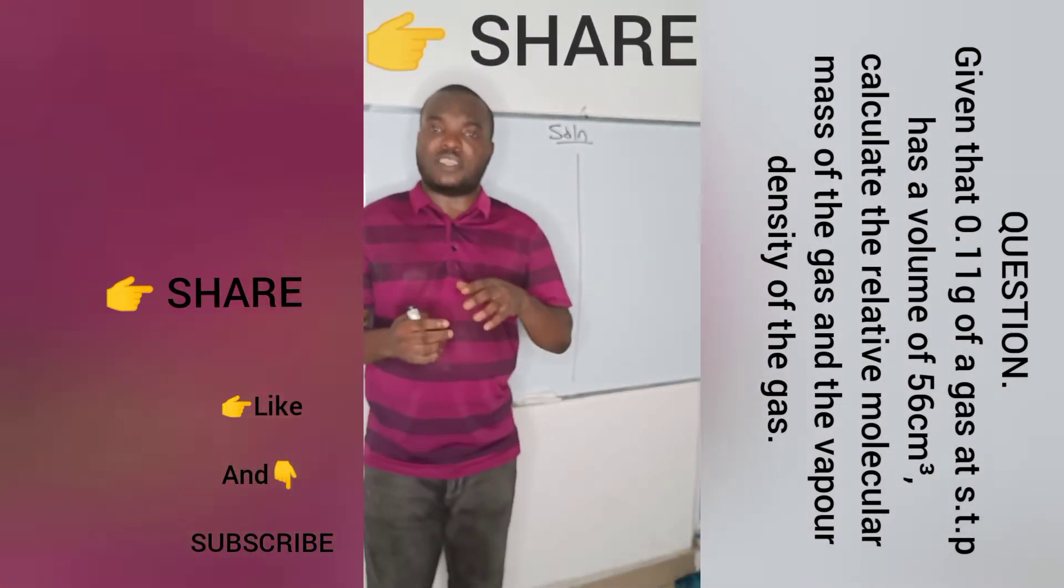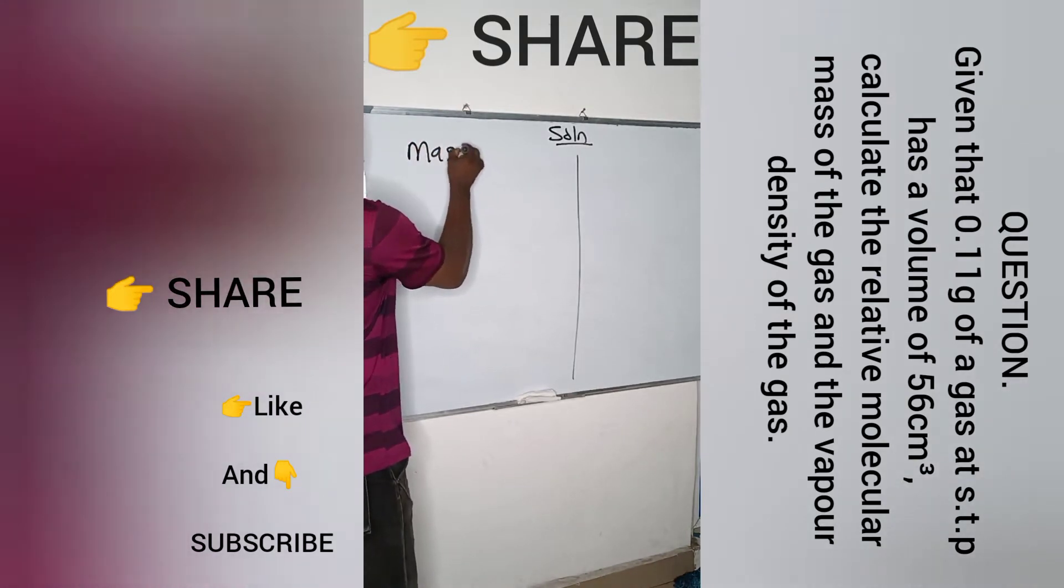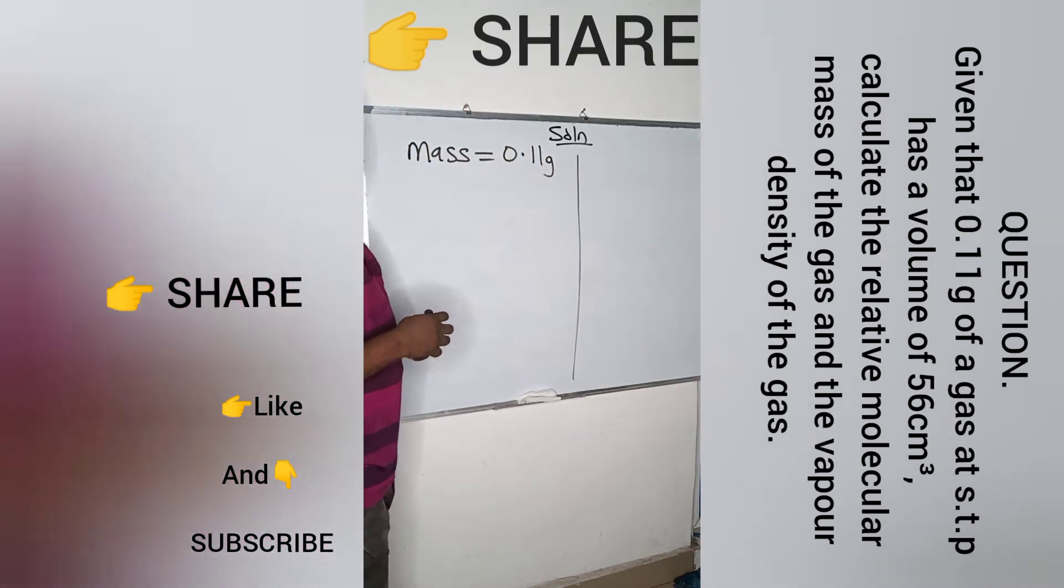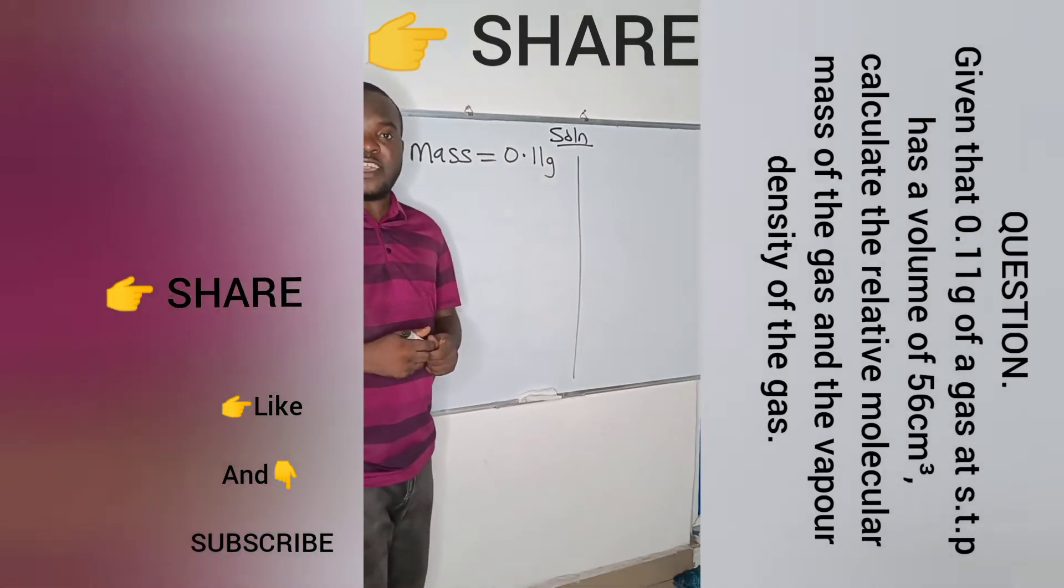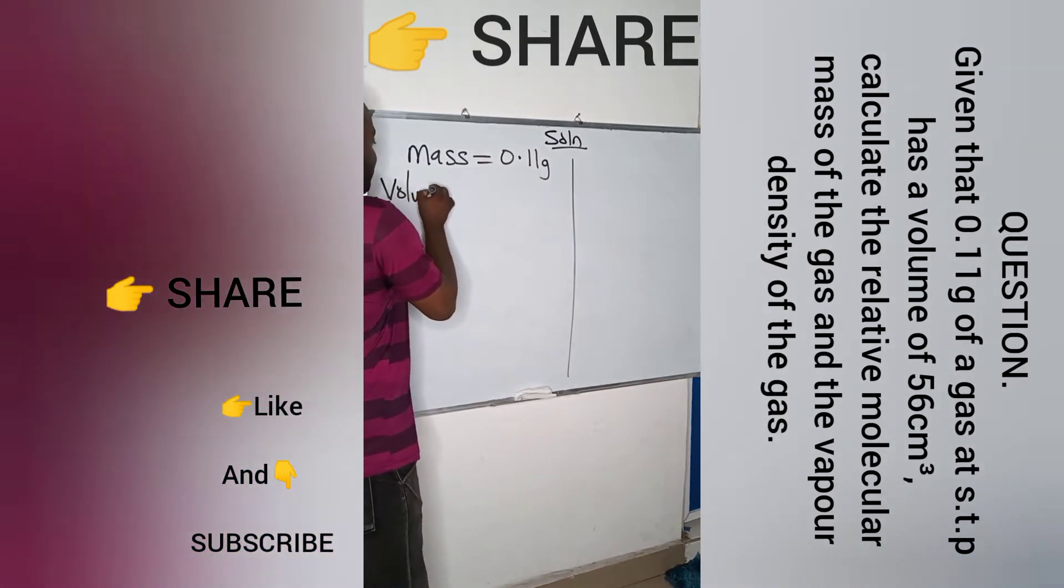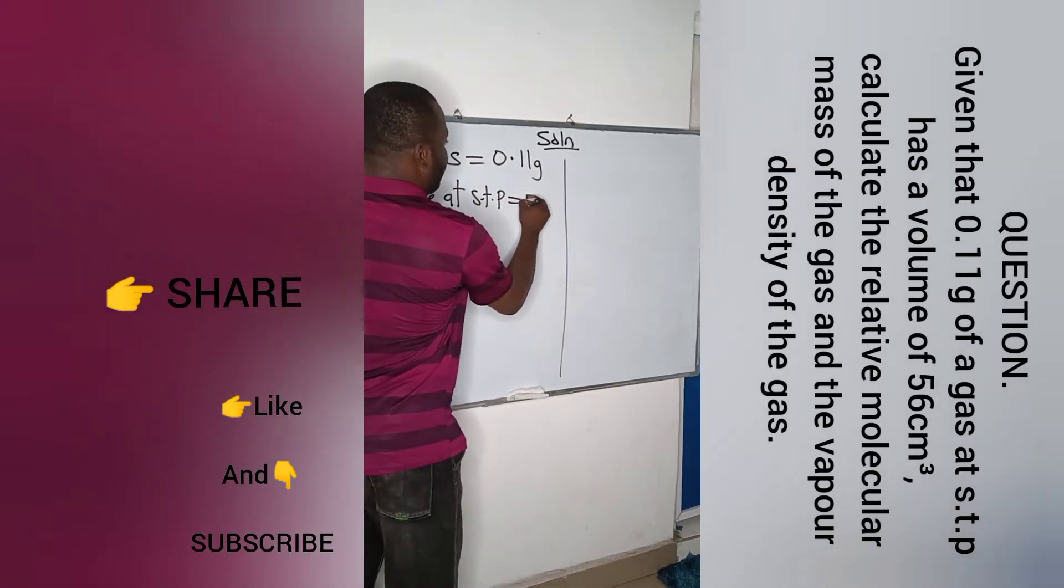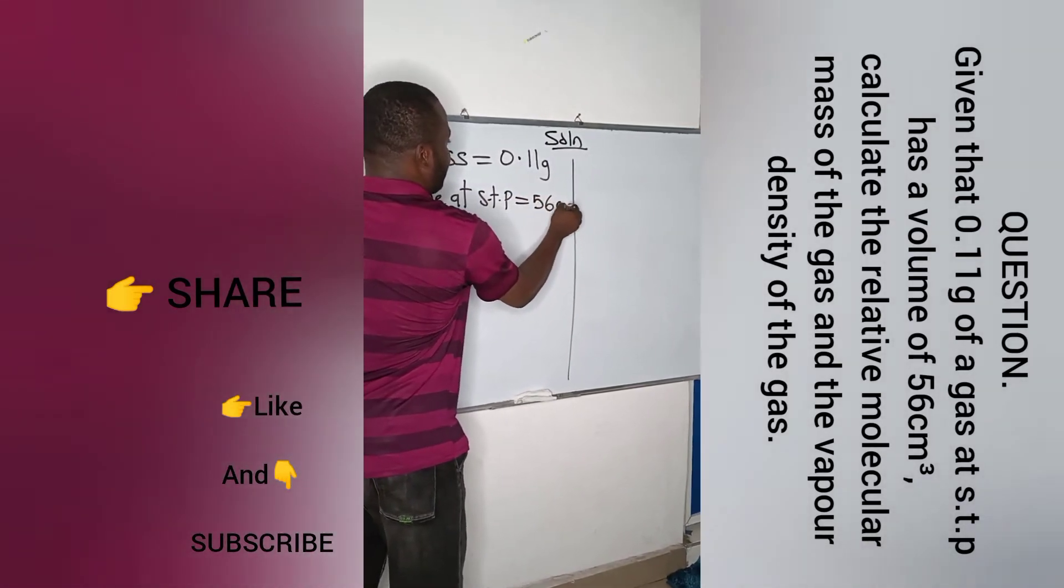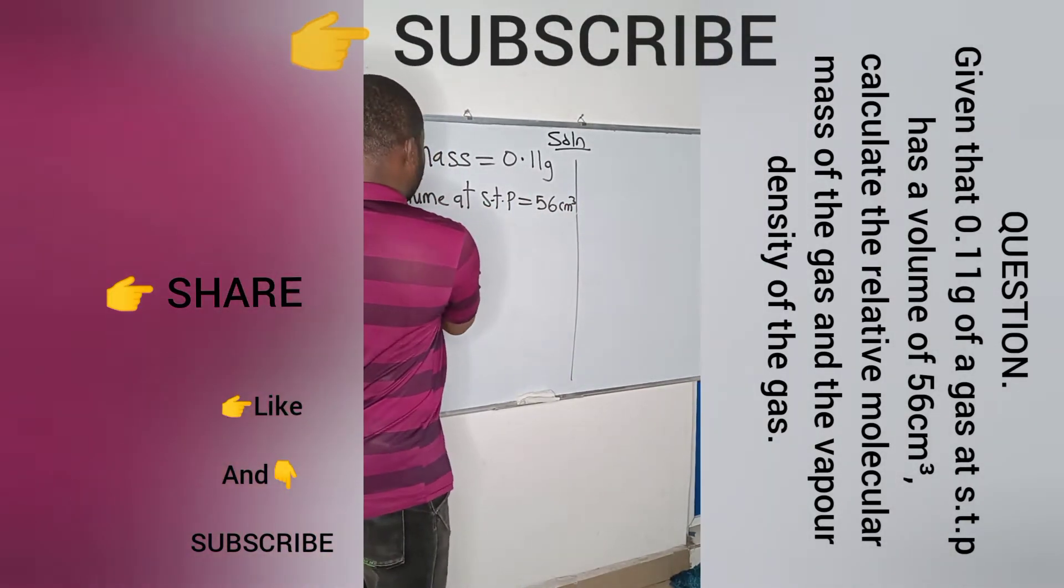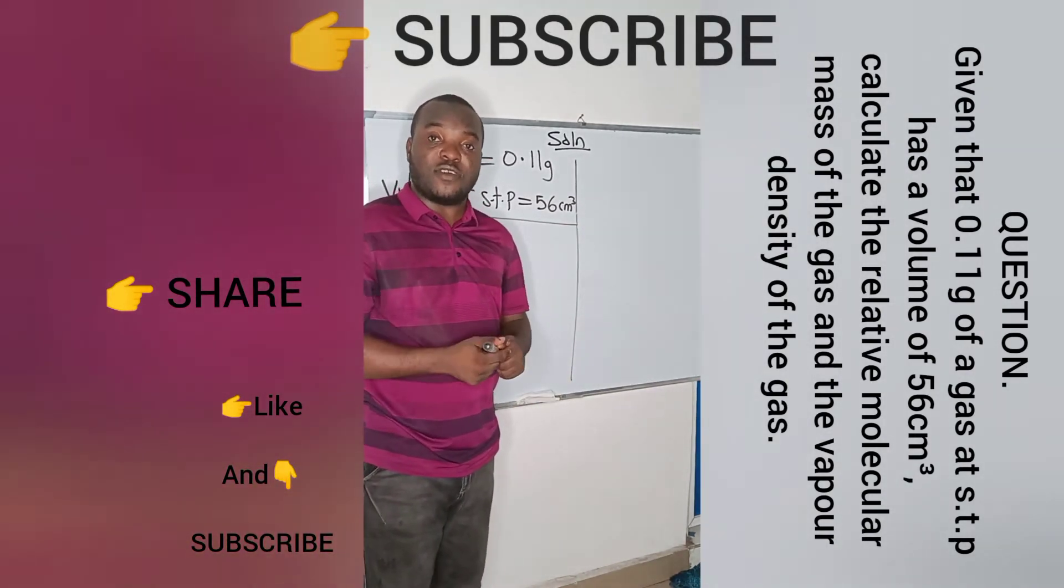We are asked to find two things here and two things were also given to us. Mass is given to us, mass of the gas is given as 0.11 grams. Also the volume at STP is given as 56 cm³. And we are asked to use these two things to find the molar mass of the gas and the vapor density of the gas.